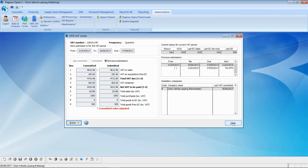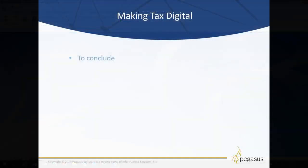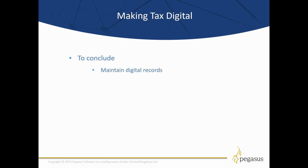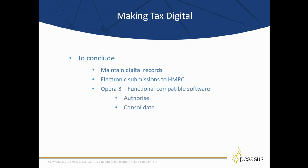That concludes the software demonstration part of this presentation. To conclude: the Making Tax Digital legislation states that VAT registered businesses with a taxable turnover above the VAT threshold are mandated to keep digital VAT records. HMRC believe that improved accuracy will result if businesses maintain digital records of their sales and purchases using MTD-compatible software, and that those digital records will be used to create and send VAT returns directly to HMRC — avoiding transposition errors where information is manually entered onto the HMRC site, thereby reducing tax loss from avoidable errors.